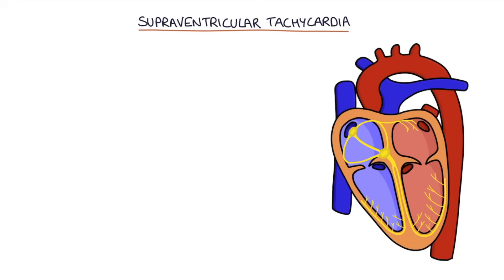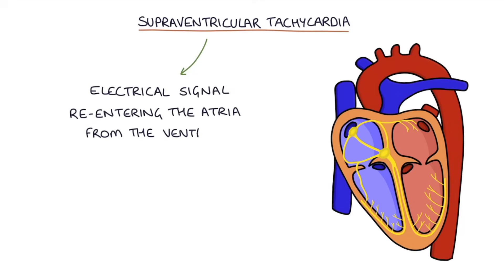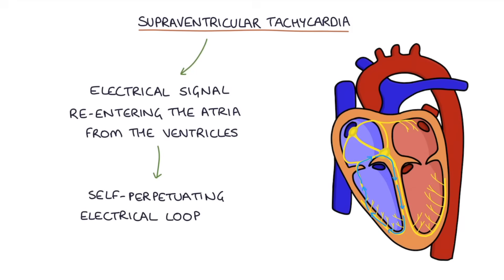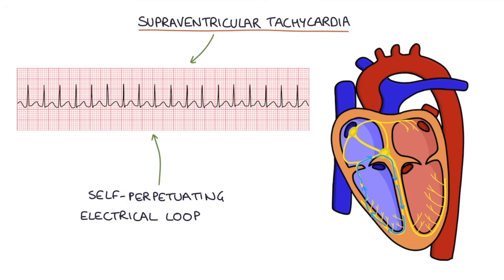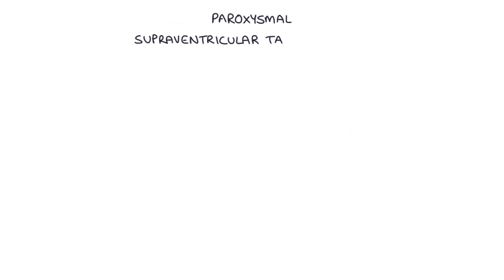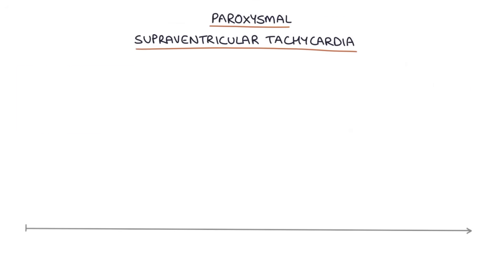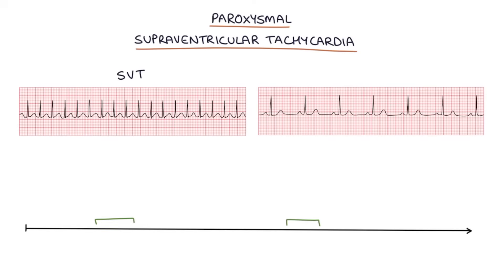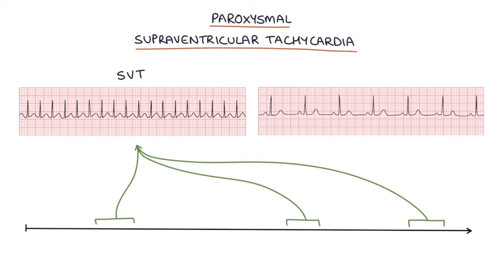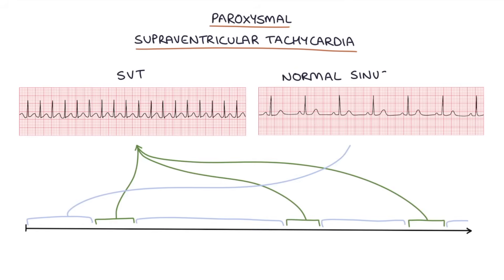In most cases of supraventricular tachycardia it's caused by the electrical signal re-entering the atria from the ventricles. Once the signal is back in the atria it travels back through the AV node to the ventricles again and causes another ventricular contraction. This causes a self-perpetuating electrical loop without an end point, resulting in a fast narrow complex tachycardia. Paroxysmal SVT describes a situation where the SVT reoccurs and remits in the same patient over time, with periods of normal sinus rhythm in between.